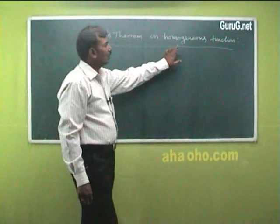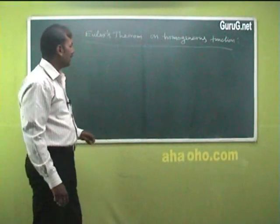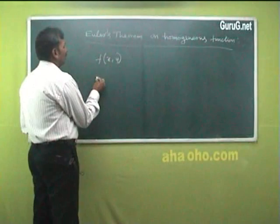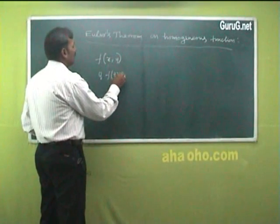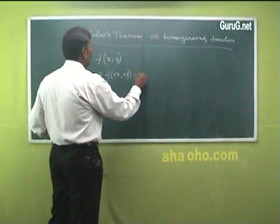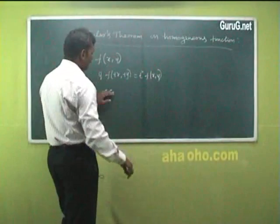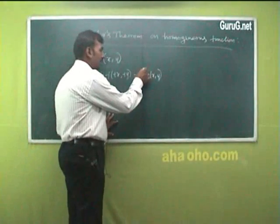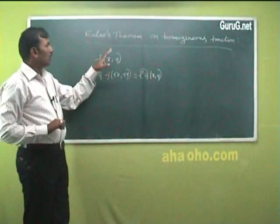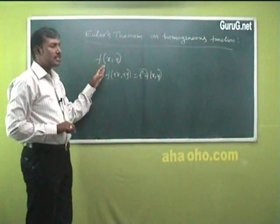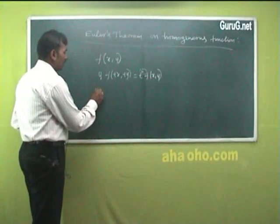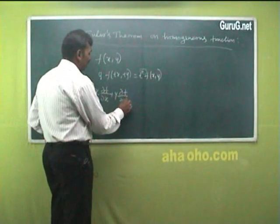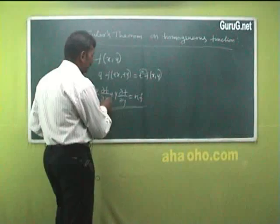The next one: Euler's theorem on homogeneous functions. Consider a homogeneous function where f is a function of two variables. If f(tx, ty) equals t to the power n into f(x, y), whenever this result is satisfied, we say the function is a homogeneous function of degree n. Euler's theorem states that if f is a homogeneous function of degree n, then x·∂f/∂x + y·∂f/∂y = nf. This is the statement of Euler's theorem.